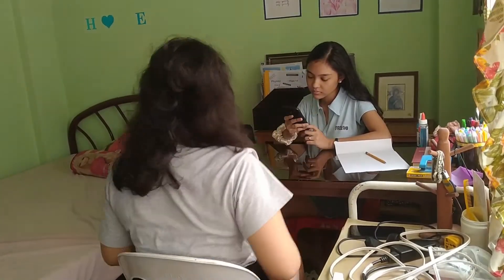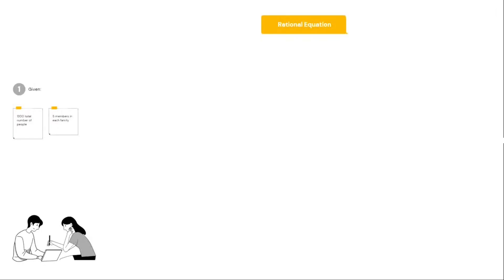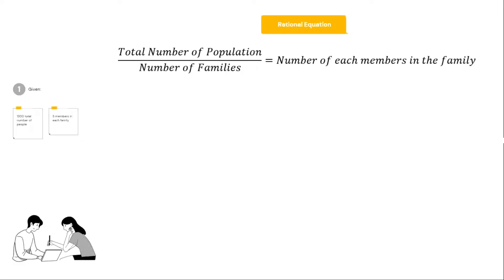I will call you again tomorrow for updates. So, we need to find out the number of families because we'll give the relief goods by household. Given that the barangay has a total of 1,300 people and five members in each family, to find out the number of families in Centro Norte Poblacion, the formula will be set up as a rational equation. As you can see, this is a rational equation. We will multiply both sides by the LCD, which is X.